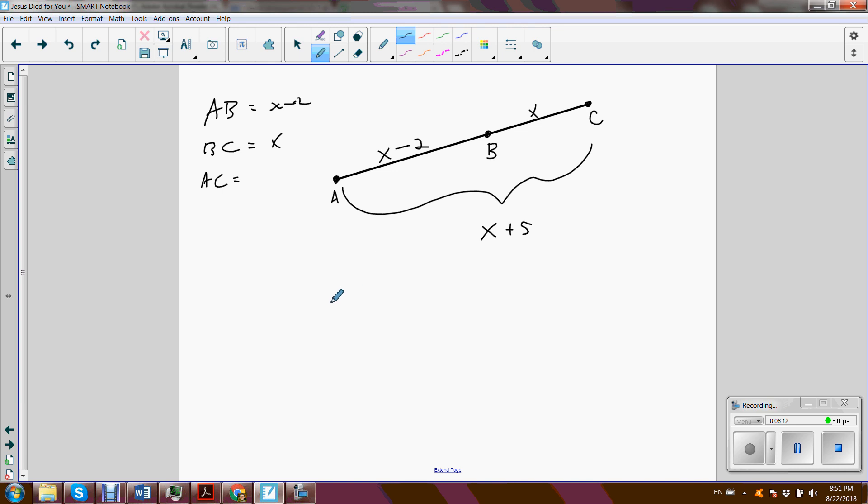So that would tell us that the AB distance, X minus 2, plus the BC distance, X, would equal the total distance, X plus 5. Part plus part equals the whole. So we'd have 2X minus 2 equals X plus 5. And a couple more steps to the algebra will be X equals 7. And then 7 minus 2 would be 5 and 7 and 12. So that worked.